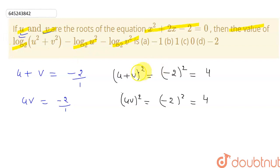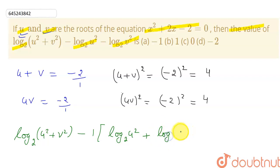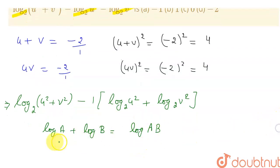Now let me simplify the expression. Taking -1 common, I can write: log base 2 of u² plus log base 2 of v². Using the log property that log a + log b = log(ab) with the same base, and log a - log b = log(a/b), I can combine these terms.